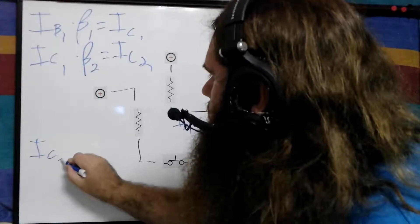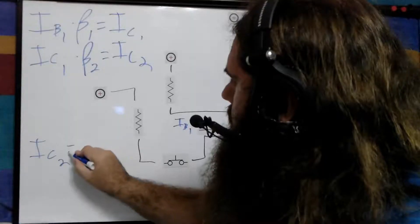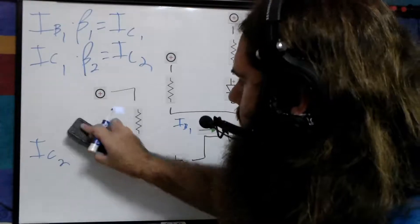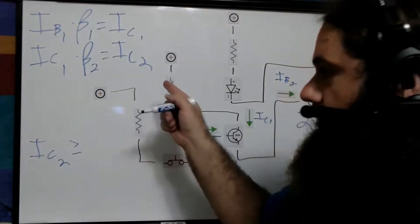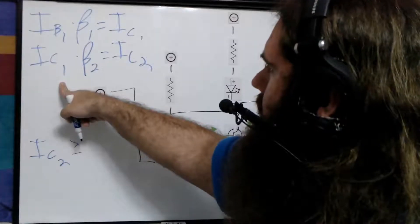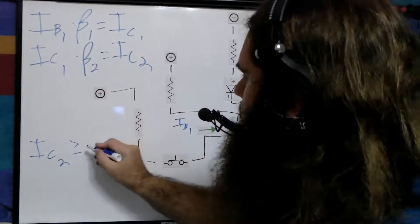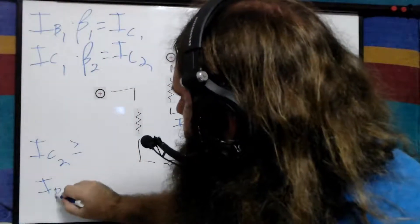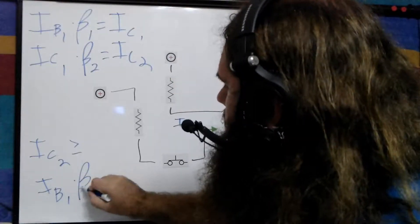So the current through collector 2, which is our load, equals, in fact, to be accurate, greater than or equal to because we're ignoring the base just so I don't have to write as much in this very small space. IC1, which is IB1 times beta 1, current through base 1 times beta 1 times beta 2.